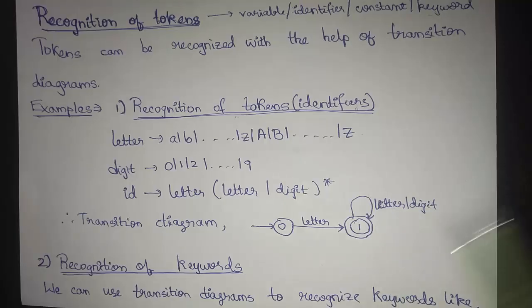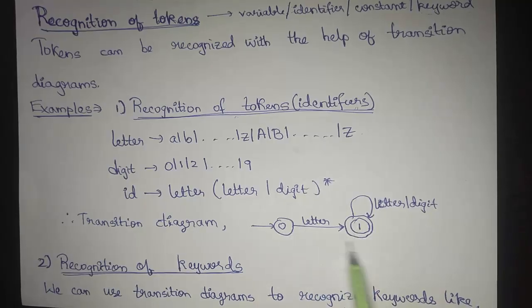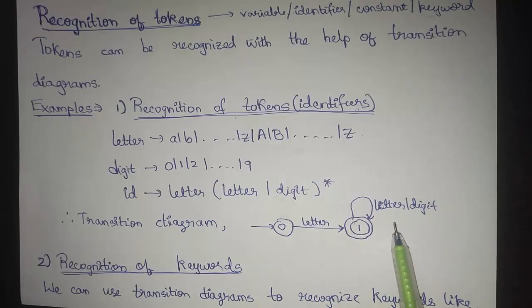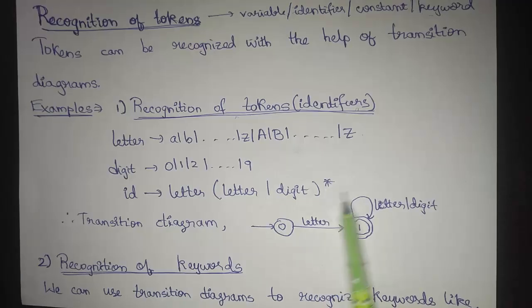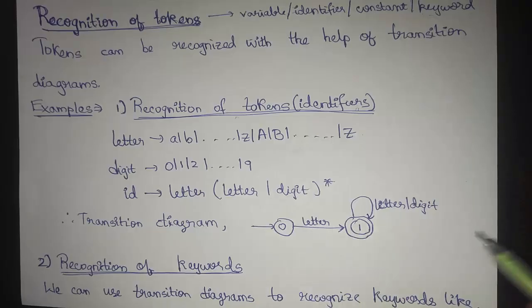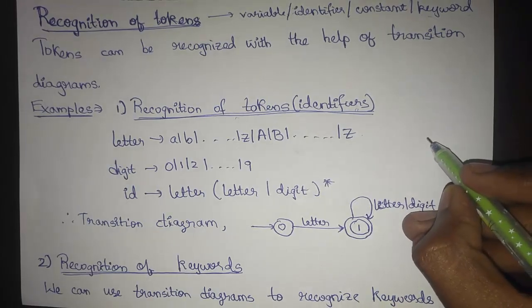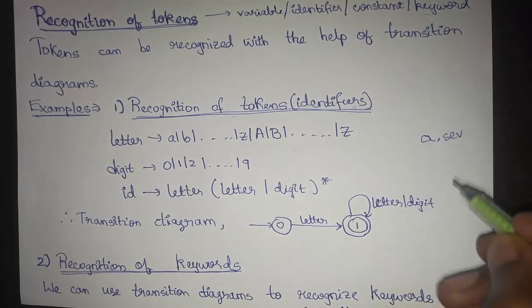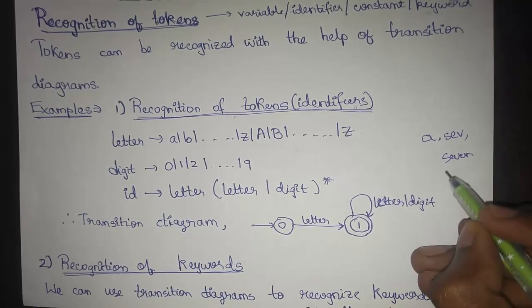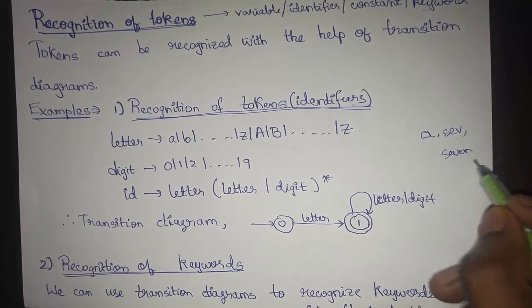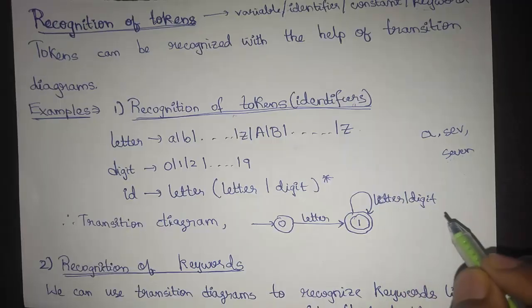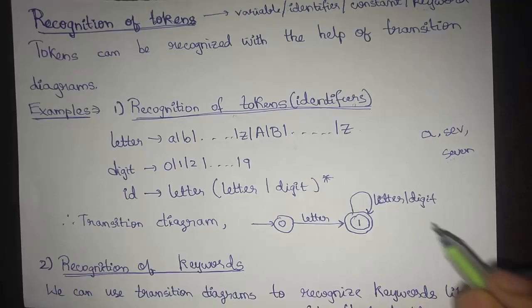An identifier would be a variable, a function name, a method name, etc. in any programming language. The transition diagram starts from the initial state going to the final state directly, and we remain in the final state whenever we get a letter or digit zero or more times. So an identifier could be 'a', 's', 'e', 'v', or 'seven' — after the first letter we stay in the final state for each subsequent letter or digit.